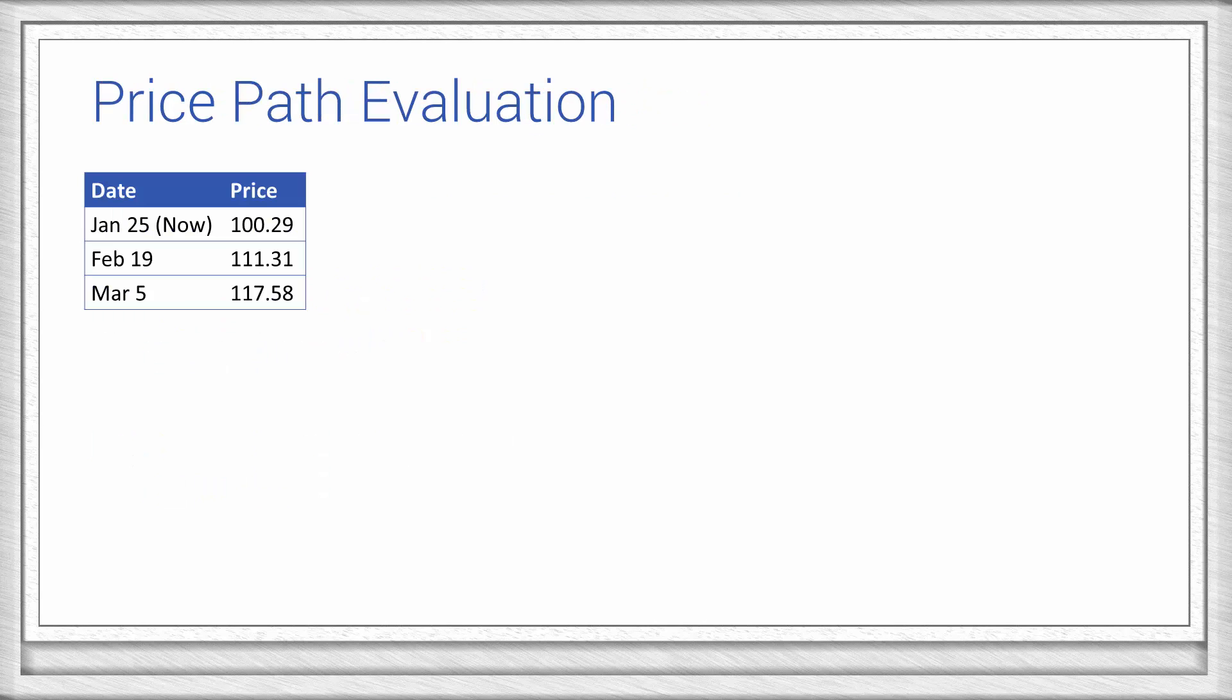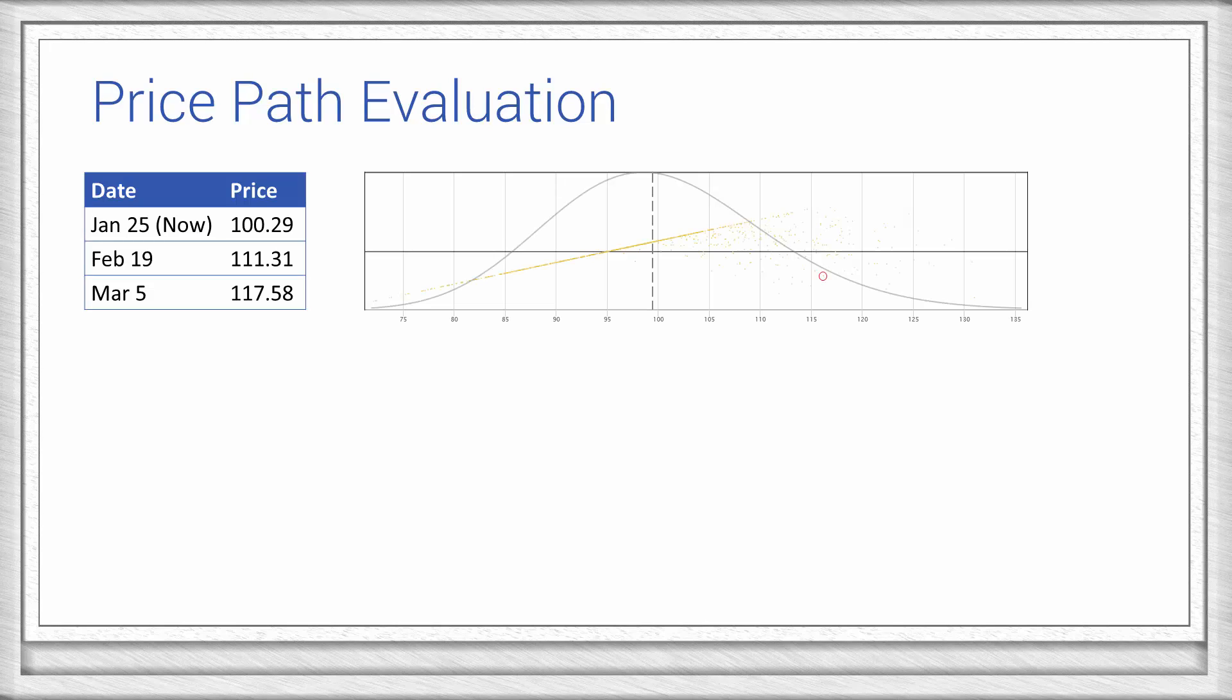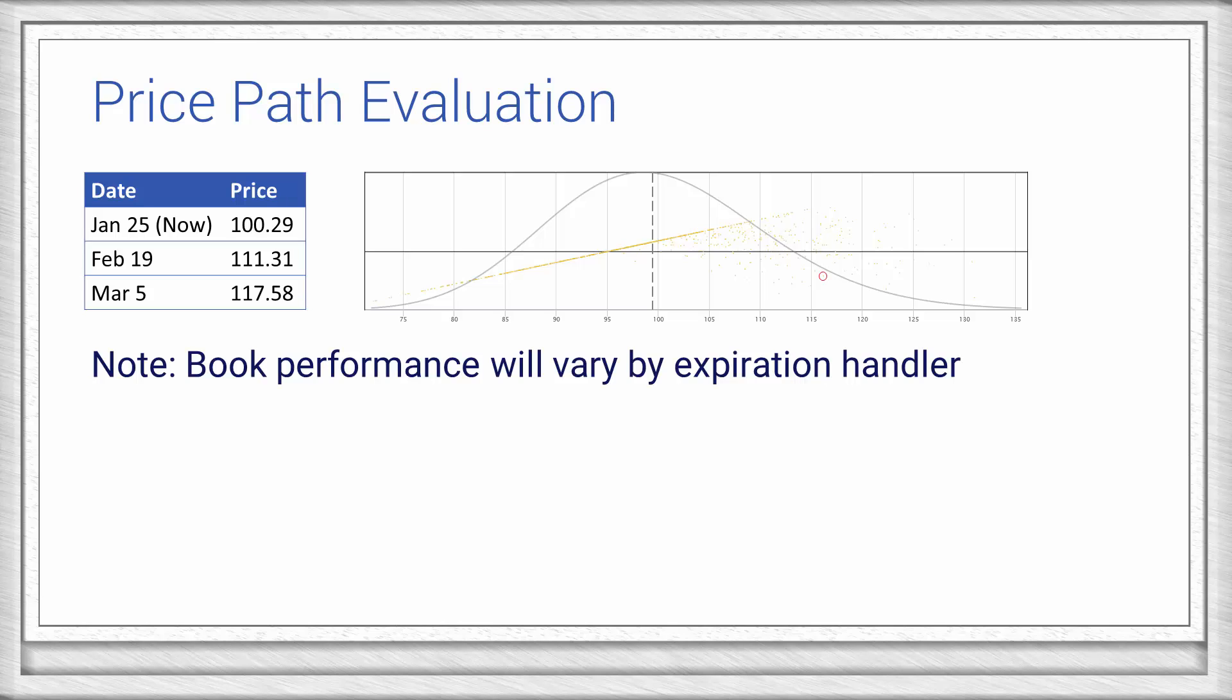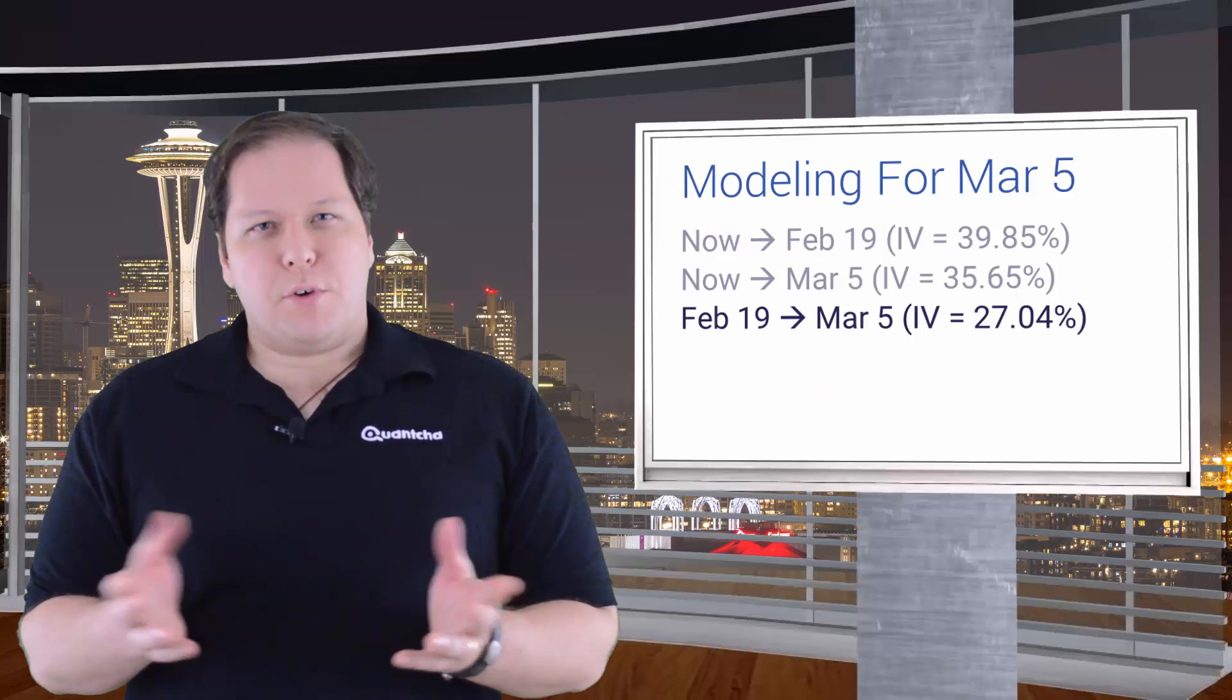This whole process produced a single price path, but in practice it takes hundreds and sometimes thousands of potential price paths to gain real insight as to how an option book might perform over time. It's also common for a single price point to have been reached via multiple price paths, so the expiration handling strategy in play can play a significant role in determining the outcome.